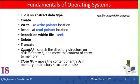A file is an abstract data type. To define a file properly, we need to consider the operations that can be performed on it. The operating system can provide system calls to create, write, read, reposition, delete, and truncate files. Let's examine what the operating system must do to perform each of these basic file operations.